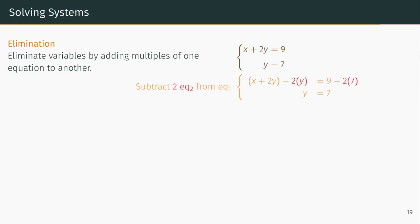Now we subtract twice the second equation from the first, and we eliminate y from the first equation, and we have our original solution of x equals minus 5 and y equals 7.